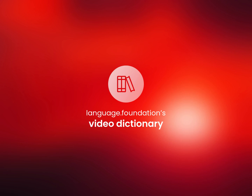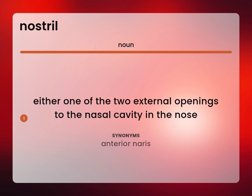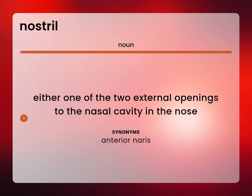Language Foundation's Video Dictionary, helping you achieve understanding. Anterior Naris: either one of the two external openings to the nasal cavity in the nose.